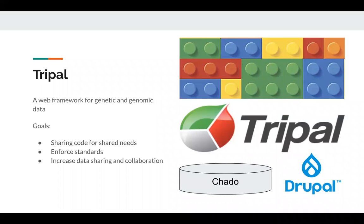A little bit of background on TRIPLE. This is about a 10-year-old software framework really meant to help build genetic and genomic databases. We have many community databases for model organisms, various crop plants, and different livestock, so it's quite a common software use case. The goals for developing TRIPLE were to have shared code for all of these common needs across these databases, to help enforce standards, metadata, ontologies, and standard formats, and to really increase data sharing and collaboration. TRIPLE utilizes Drupal, which is a popular web content management system, and also CHADO, which is a relational database schema meant for molecular biology data.